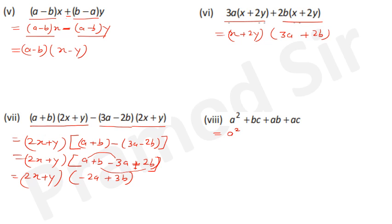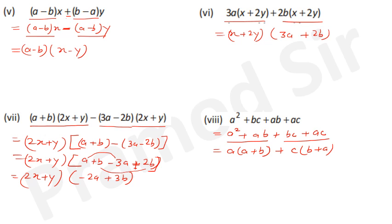Question 8: a²b + ab² + ac + bc. Group first and third terms: a²b + ac, then second and fourth: ab² + bc. Take a common from first group: a(ab+c); take b common from second: b(ab+c). Now take (ab+c) as common: (a+b) is left — wait, take (a+b) common: (a+b)(a+c). Answer: (a+b)(a+c).